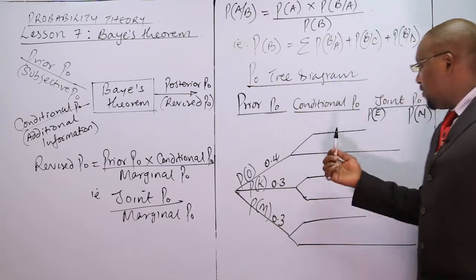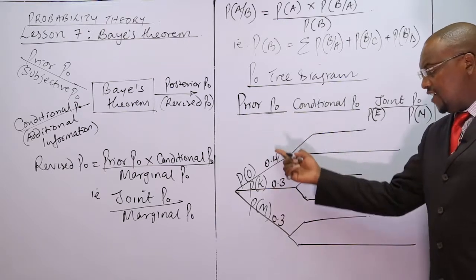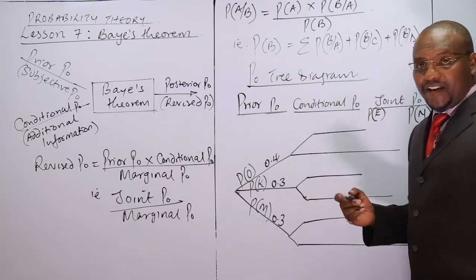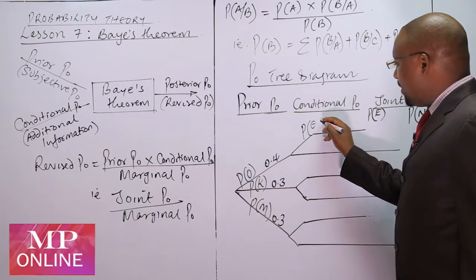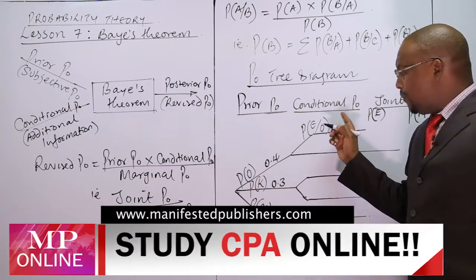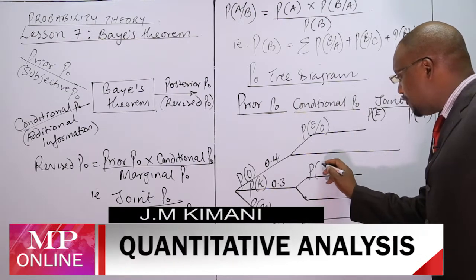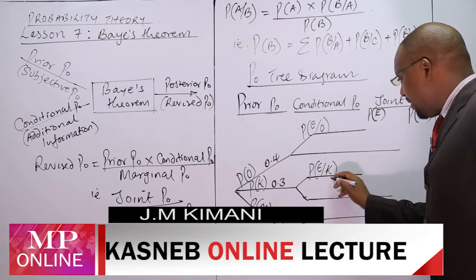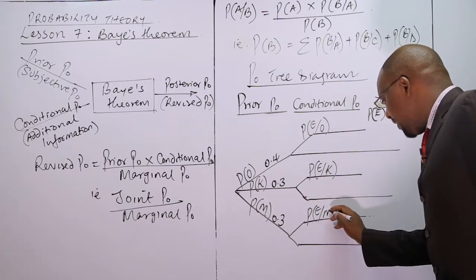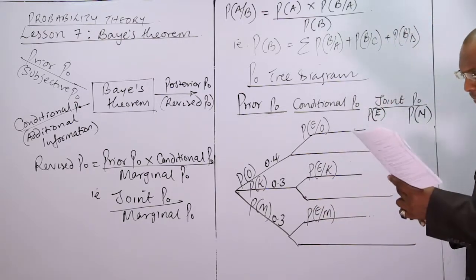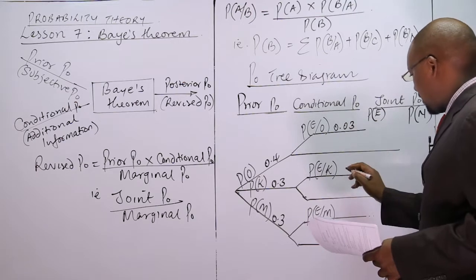Koech and Moai each receive 30%, so 0.3 respectively. Remember, for every stage all branches should give a total probability of 1. Moving to the conditional probabilities — the outcome after auditing — we identify who committed the errors. The first branch under Othiambo is the probability of error committed by Othiambo; similarly for Koech and Moai.